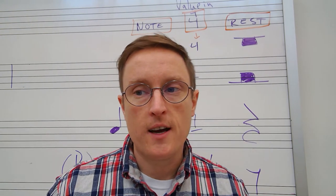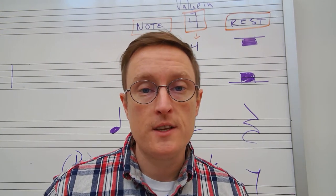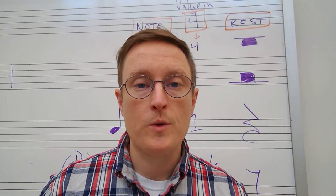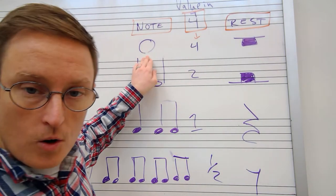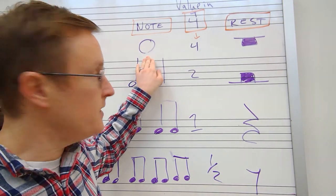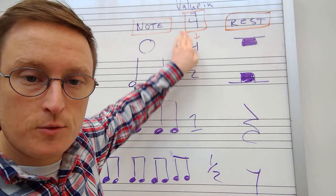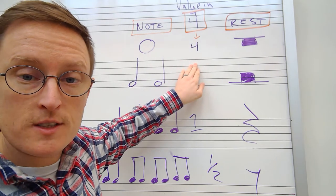4-4 time, remember, means that there would be four beats in a measure and a quarter note would get one beat. I'm going to start over here with a whole note. A whole note takes up the whole measure and in this case is worth four beats if we're in 4-4 time, otherwise known as common time.